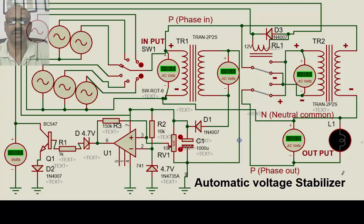Let us try to understand an automatic voltage stabilizer, or in technical terms it is called an automatic voltage regulator. The circuit looks a bit complicated here, but actually when we go through it section by section, it will be very easy to understand.